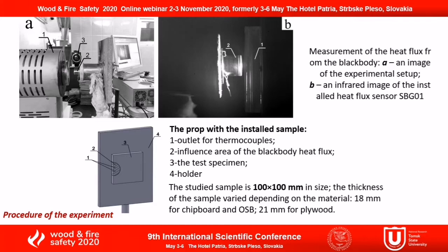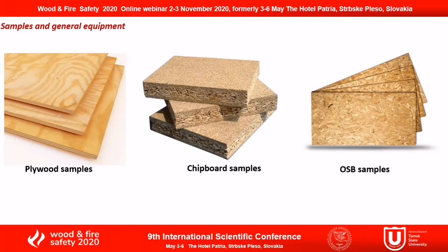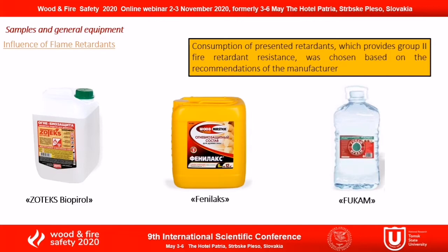In our experiments we used plywood, chipboard, and oriented strand board samples, widely used in building construction. With the development of the chemical industry, fire retardants have been developed to partially or completely prevent ignition. We used three liquid formulations that contain flame retardants and antiseptic additives.